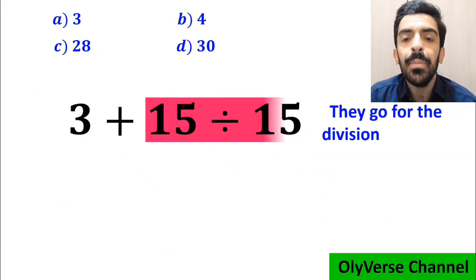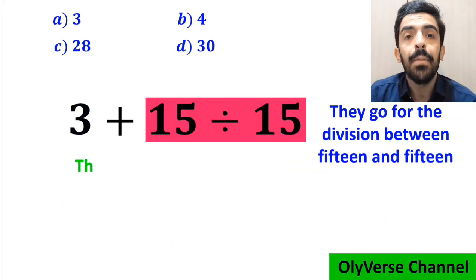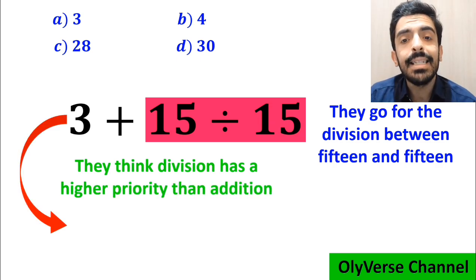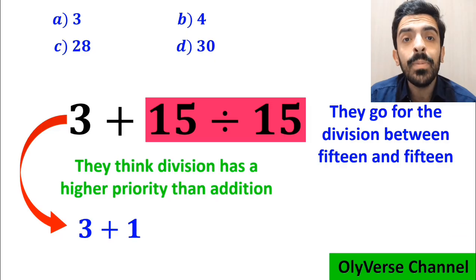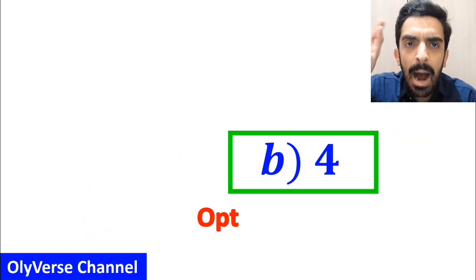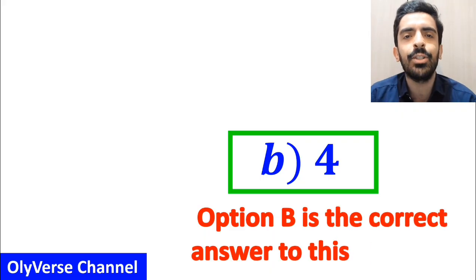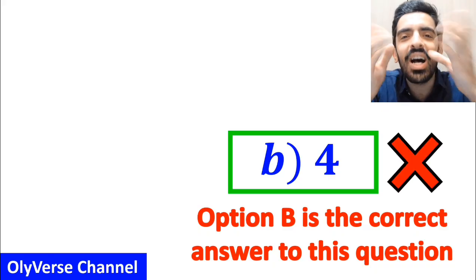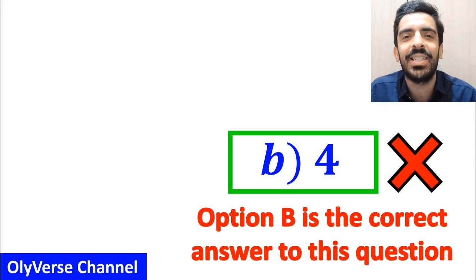Then they go for the division between 15 and 15 because they think division has a higher priority than addition. They rewrite this expression as 3 plus 1, which ultimately gives them the answer 4, and immediately they conclude that option B is the correct answer. But we were tricked — it's not the correct answer to this question.